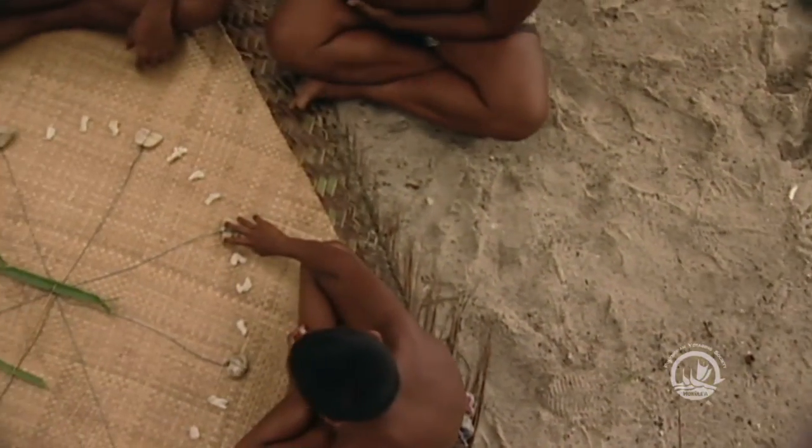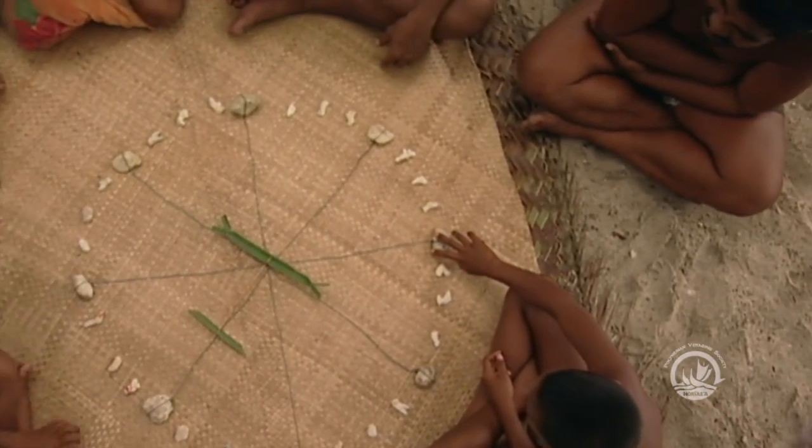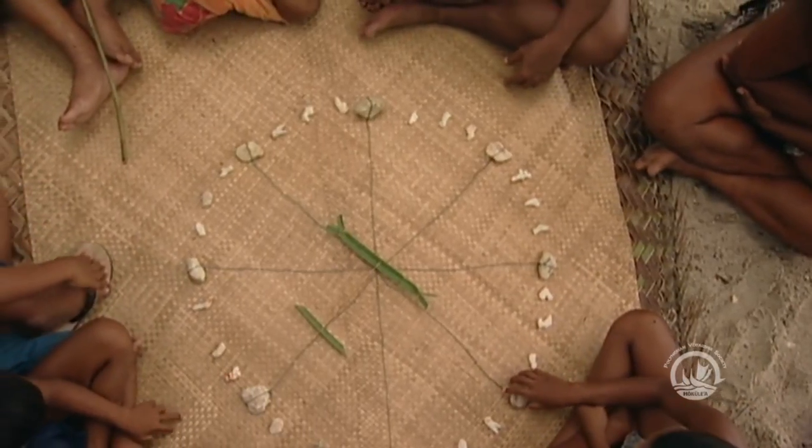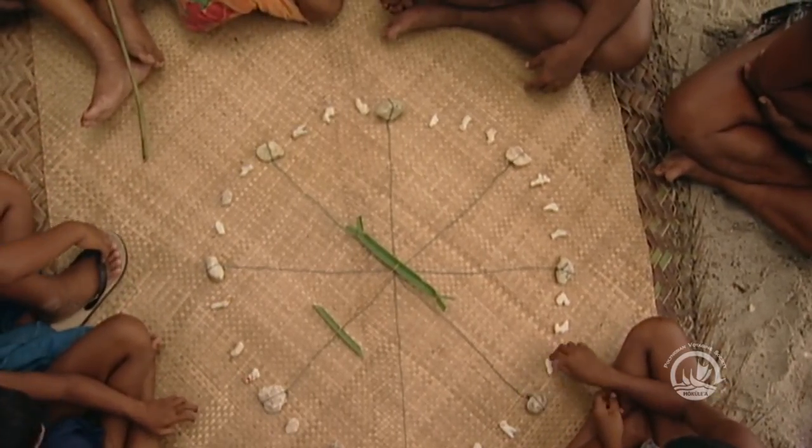The star compass is an amazing and ingenious tool. Even though you would say that they don't know mathematics, when you geometrically start to understand how this thing works, it's a mathematical kind of ingenious way of seeing the world.